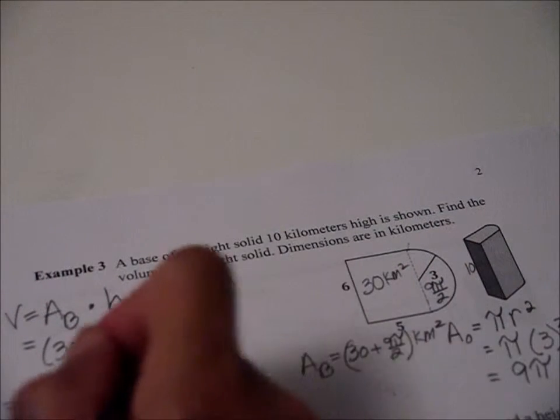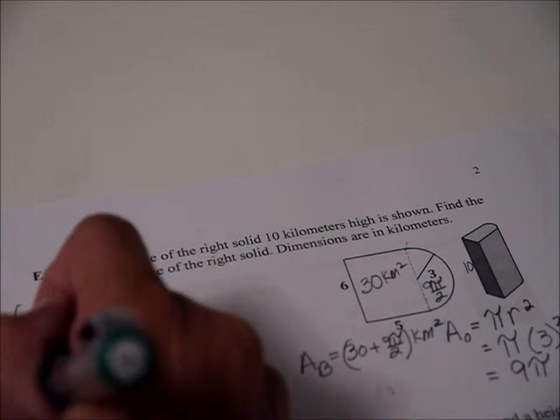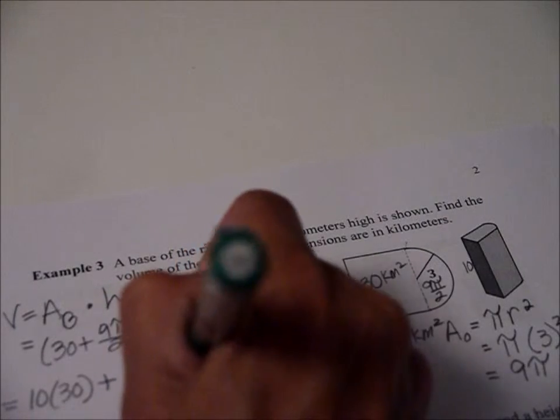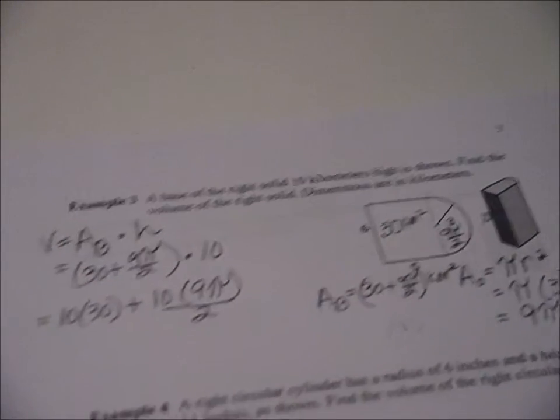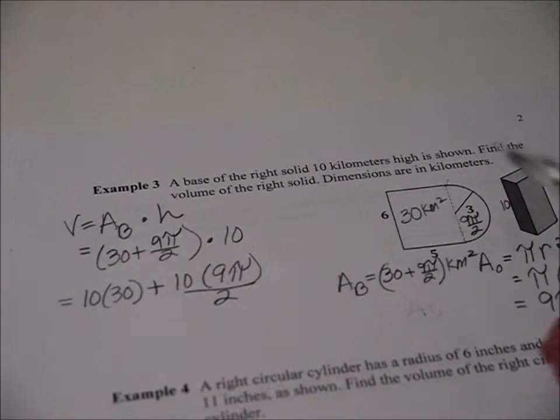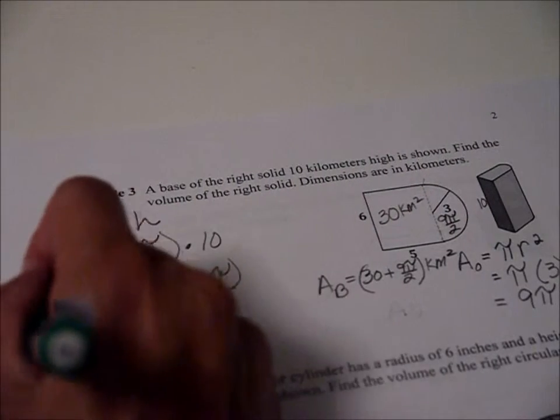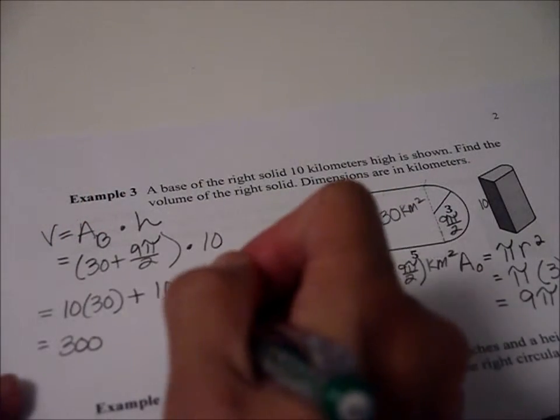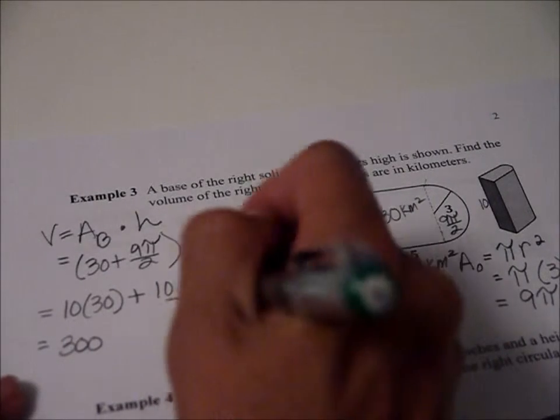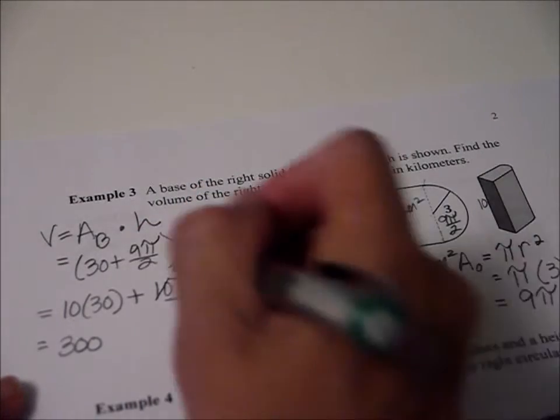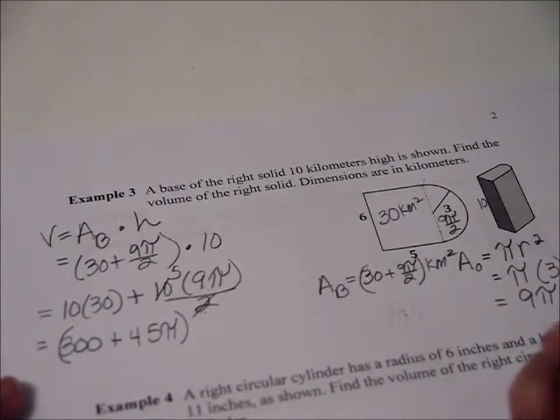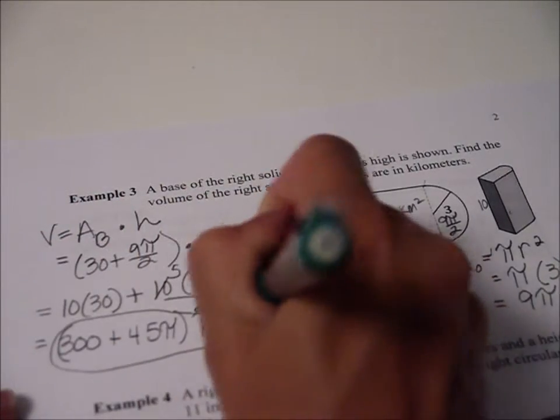So now 10 times everybody in here, you're going to hate this. That's 10 times 30 plus 10 times 9π over 2. See how I took the 10? Distributed him to both of those. Distributed property, remember? So that equals 300. And what is that? That's 90π divided by 2, or 10 divided by 2. 10 divided by 2 is a 5. 5 times 9 is 45π.